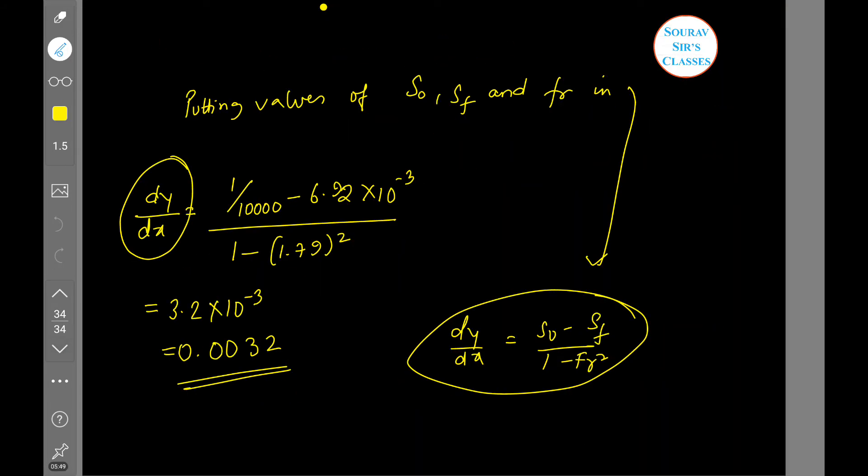So what we can say is that dy/dx = 0.0032 is the rate of change of water depth with distance at this section which was given.